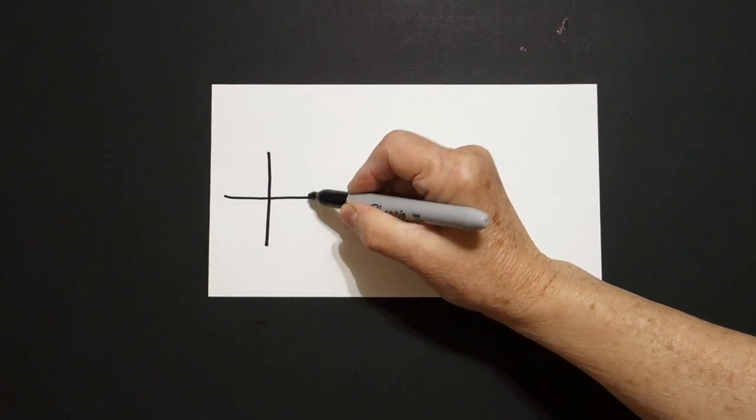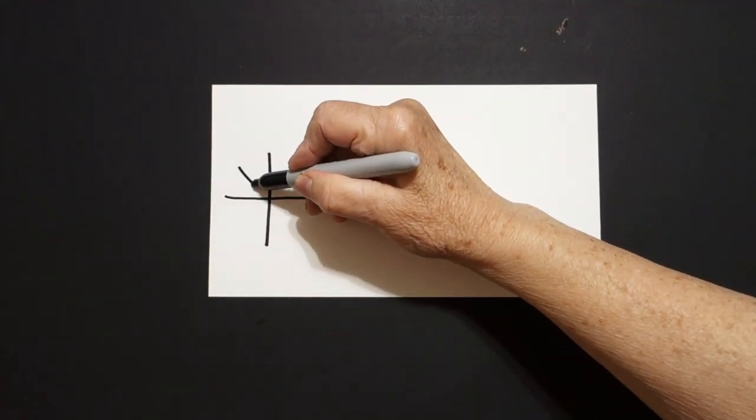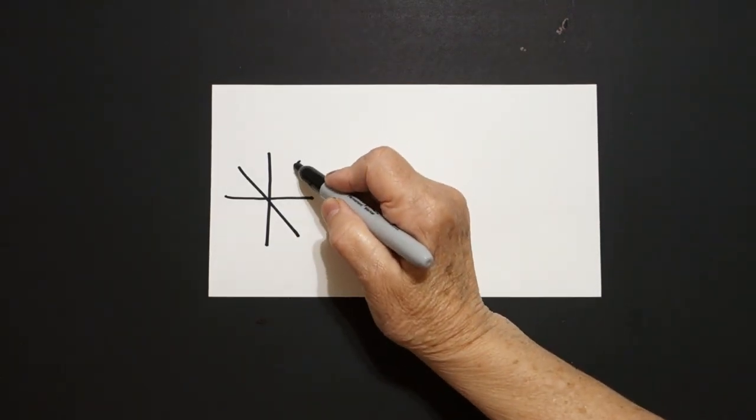Right here, we're just going to draw a straight line, straight line. Come over here and we're going to draw a straight diagonal down on the left, straight diagonal down on the right.